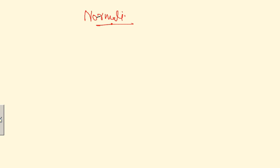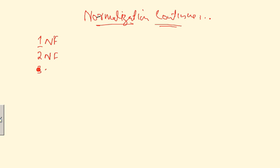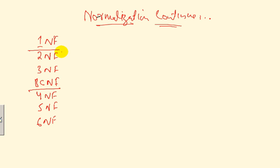Bismillahirrahmanirrahim, we continue the lecture on normalization. A quick recap: we have 1NF, then 2NF, then 3NF, then BCNF, and we have 4NF as well as 5NF. Today we also have 6NF. 1NF deals with the definition of the table and has nothing to do with functional dependencies, while the higher forms are dependent on functional dependencies.